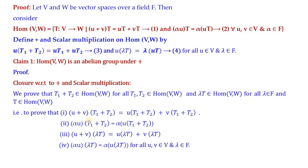The first axiom to check is closure with respect to addition and scalar multiplication. We need to prove that for T1, T2 in Hom(V,W), T1+T2 belongs to Hom(V,W), and for all λ in F, λT belongs to Hom(V,W). This requires verifying the two homomorphism conditions hold for T1+T2 and for λT.